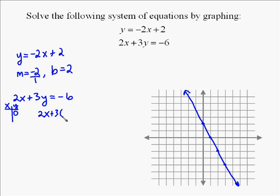So I put 0 in for y, which just goes away, so I'm left with 2x = -6. I can solve this very easily by dividing by 2, and I find out x = -3.